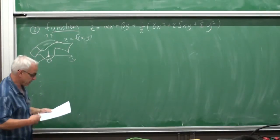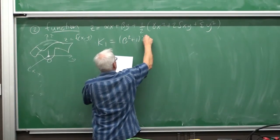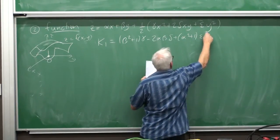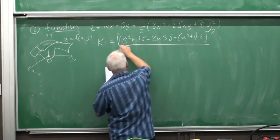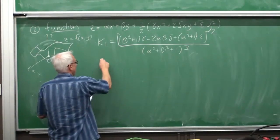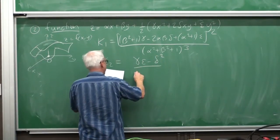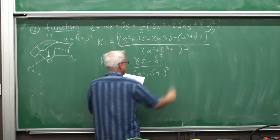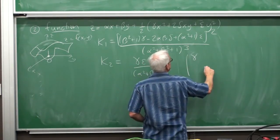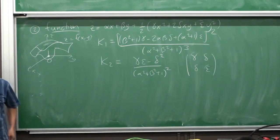In terms of those variables, the curvatures turn out to be: K₁ equals (β² + 1)γ − 2αβδ + (α² + 1)ε, all squared, over (α² + β² + 1)³. The second curvature is just γε − δ² over (α² + β² + 1)². The Hessian here is just the 2×2 matrix with entries γ, δ, δ, ε, and the numerator of K₂ is the determinant of that 2×2 Hessian.